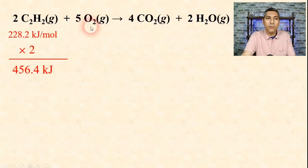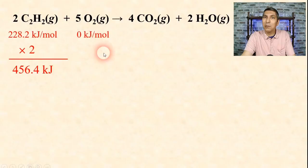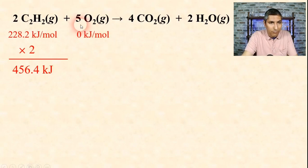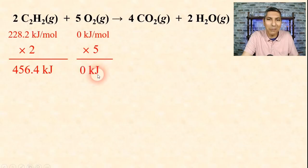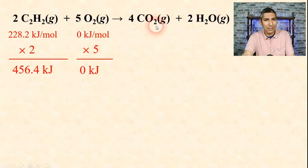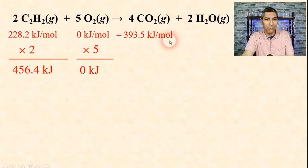The enthalpy of formation of oxygen is zero because the enthalpy of formation of any element in its most natural state is zero. There are 5 moles of this, so we technically have to times it by 5, but of course that's still zero. On the product side, we have carbon dioxide gas. That enthalpy of formation is negative 393.5 kilojoules per mole. Since there are 4 moles of this, we have to multiply it by 4, which gets us negative 1,574 kilojoules.